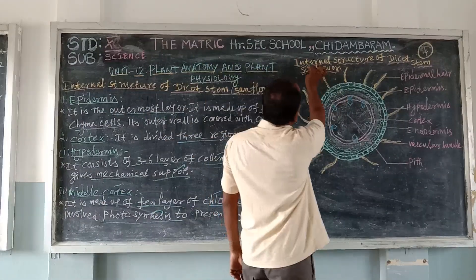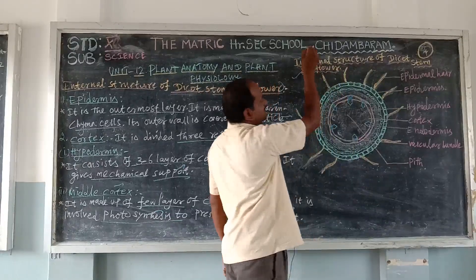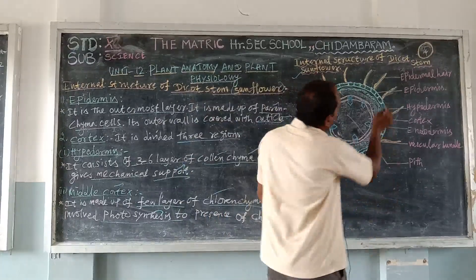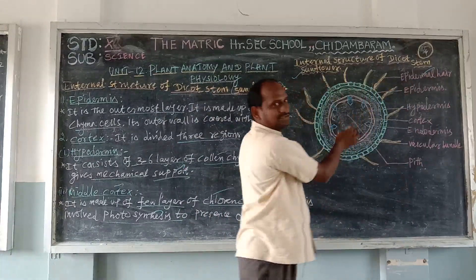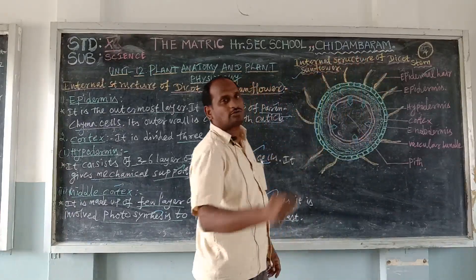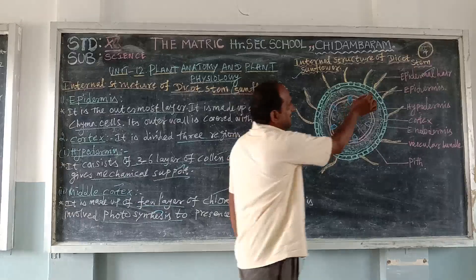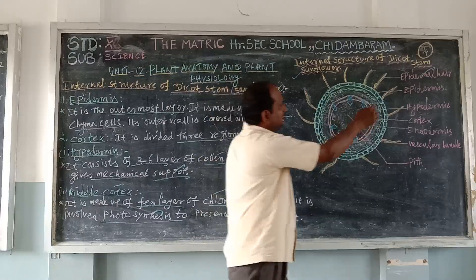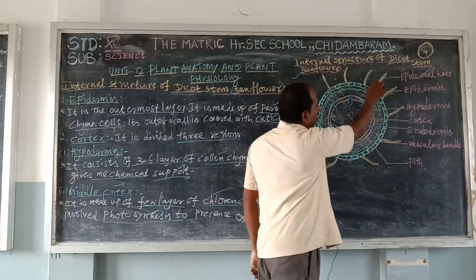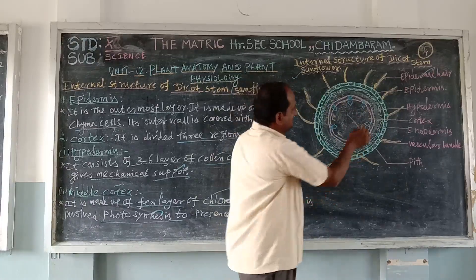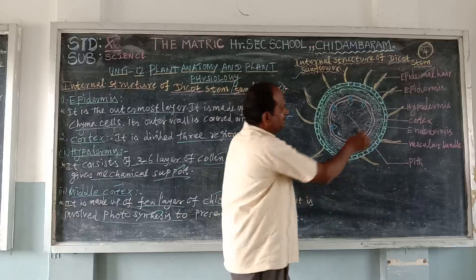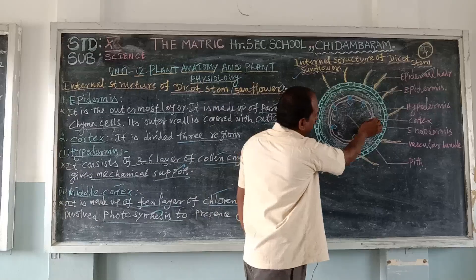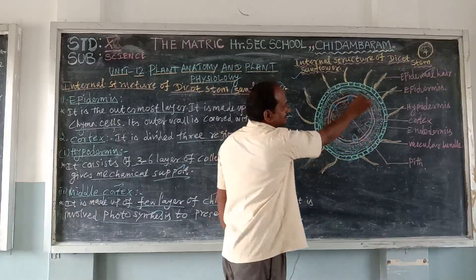Now let us go to the drawing of the internal structure of the dicot stem — the sunflower. The outermost layer has epidermal hairs, which are hair-like structures produced from the epidermis. Inner to that is the epidermis layer. The next inner part is the hypodermis. Then comes the cortex in the central region.